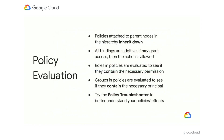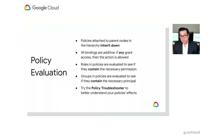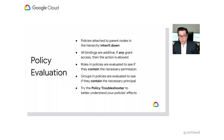To recap, where you attach policies matters. You can simplify policy management by setting them further up in the hierarchy to grant more access, but also lower down on the project or on individual resources when access needs to be more fine-grained. All bindings are additive, so it's important to understand the bindings you've configured to ensure you're not granting access to someone you did not intend. Understanding the permissions in the roles you're granting and who are members of the groups to whom you've granted access, as well as who controls the membership in those groups, are both important aspects of making informed policy management decisions. And finally, you can use tools that Google provides to better understand the effective state of your policies.